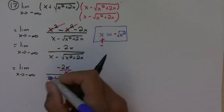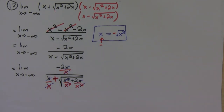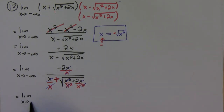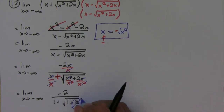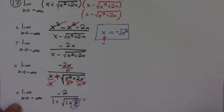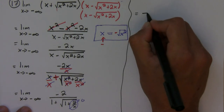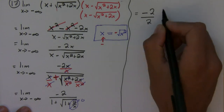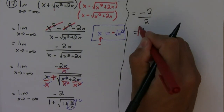Now if we simplify, we get negative 2 on top, and on the bottom 1 plus the square root of 1 plus 2 over x. So we have the limit as x approaches negative infinity of negative 2 over 1 plus square root of 1 plus 2 over x. The 2 over x term goes to zero, so the numerator is negative 2 over 1 plus 1, which is 2. Therefore the answer is negative 1.